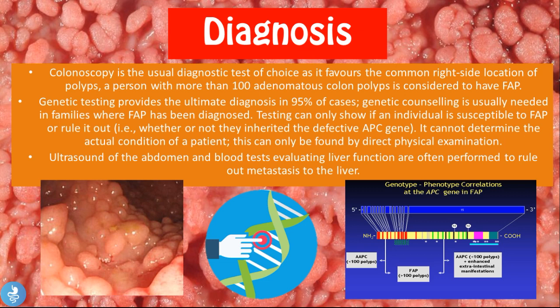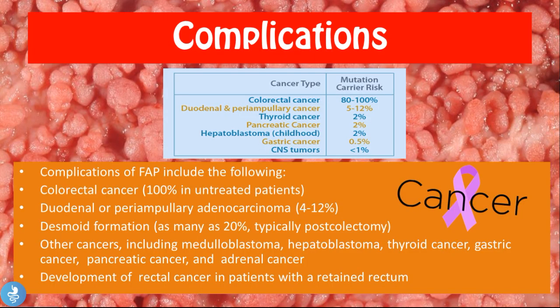An ultrasound of the abdomen and blood tests evaluating liver function are often performed to rule out metastasis to the liver. Remember that these patients are prone to colon cancer, and colon cancer frequently metastasizes to the liver. Therefore, a liver ultrasound can be very efficient in checking whether the patient's liver is healthy and no cancerous cells are found there.